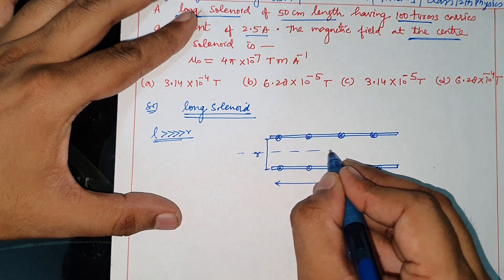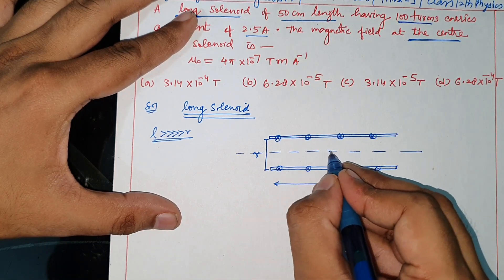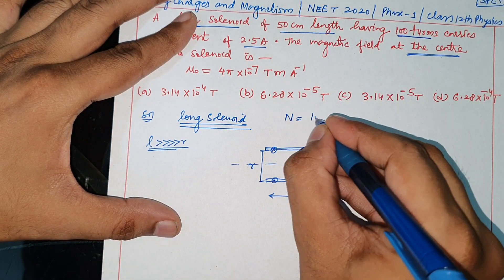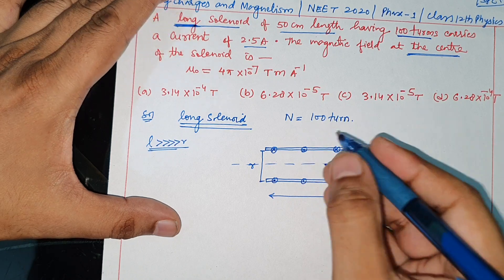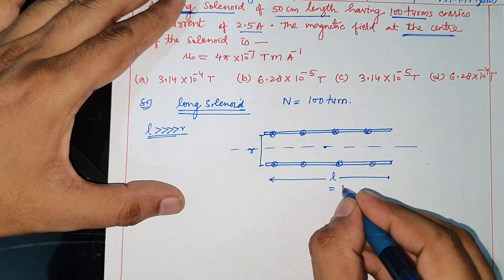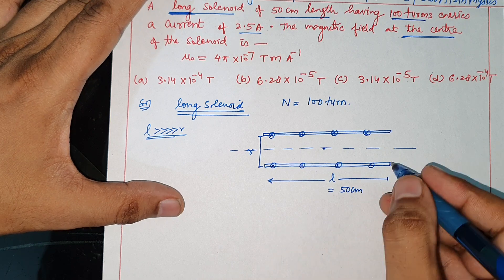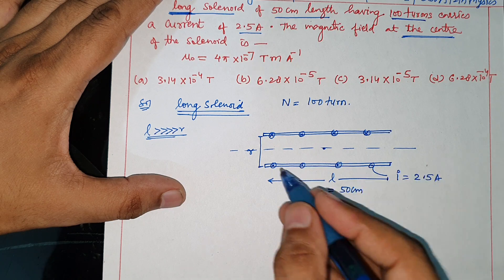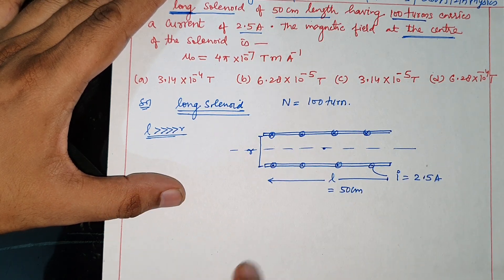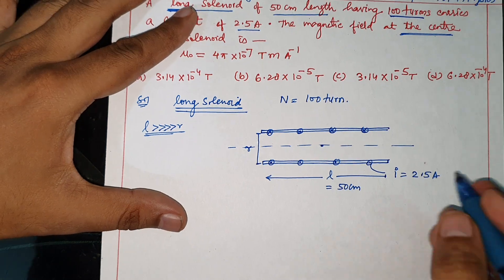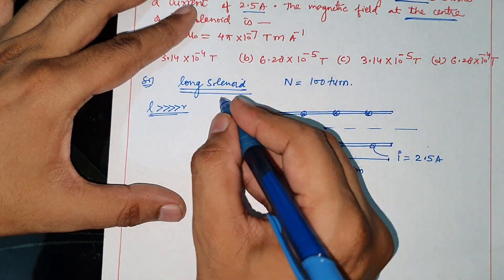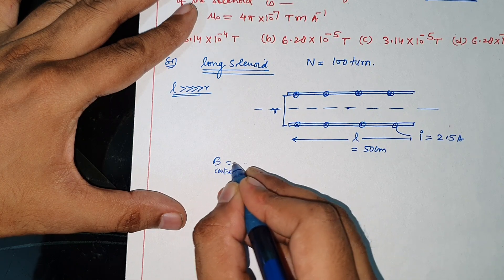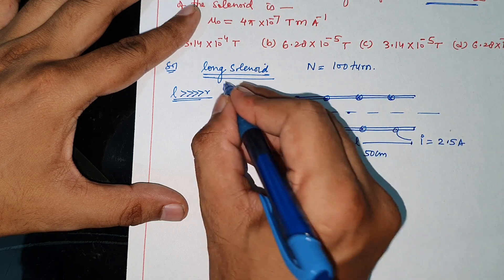Ab iski axis par, inside center par, yahan center par magnetic field pooch raha hai. Number of turns diye hain 100 — yeh total number of turns hai. Aur length di hai 50 cm, aur current jo flow kar rahi hai woh hai 2.5 ampere. Dot ka matlab current upar taraf nikal raha hai, cross matlab andar taraf — yeh cross-sectional view dikhaaya hai solenoid ka. Center par magnetic field ka formula kya hota hai long solenoid ke liye? B equal to — center par, middle ka ho, inside ka ho — ise ideal solenoid bhi bolte hain.